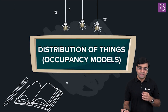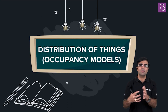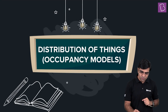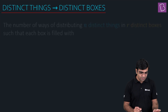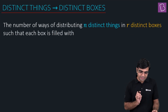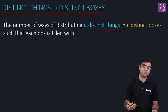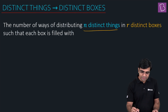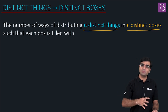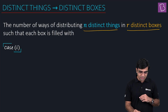Let's get up for the concept of the day: distribution of objects, also called the occupancy model — how many objects are placed in which position. We have n distinct objects and r distinct boxes. The question is: the number of ways of distributing n distinct things into r distinct boxes, filled with — and I'm answering this in various cases. Boxes are distinct and objects are distinct.